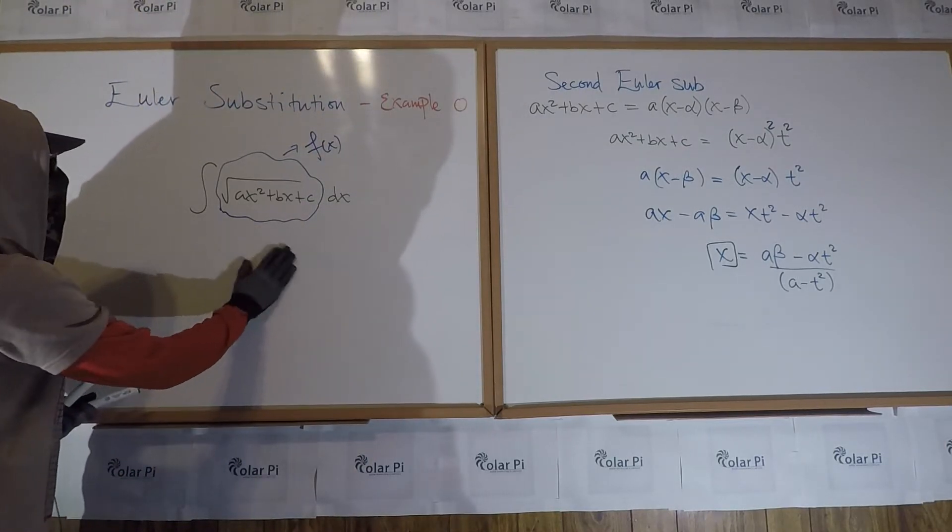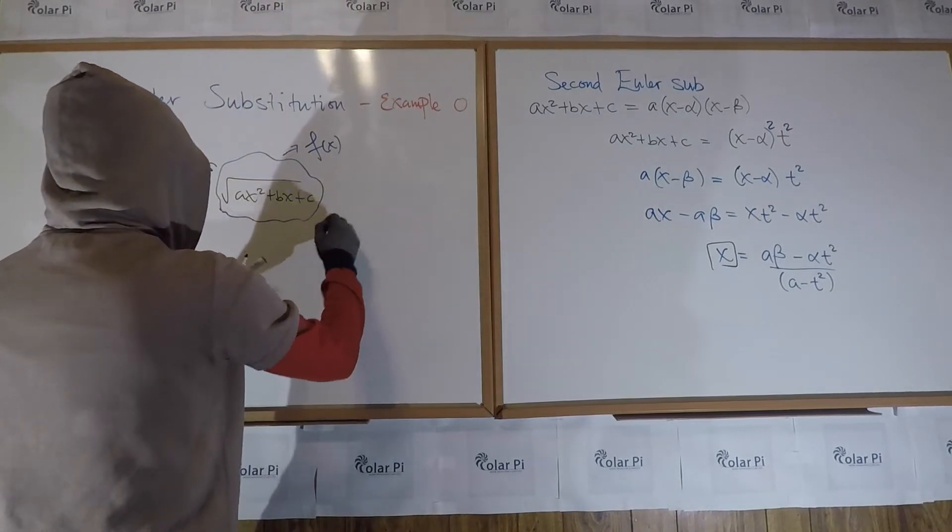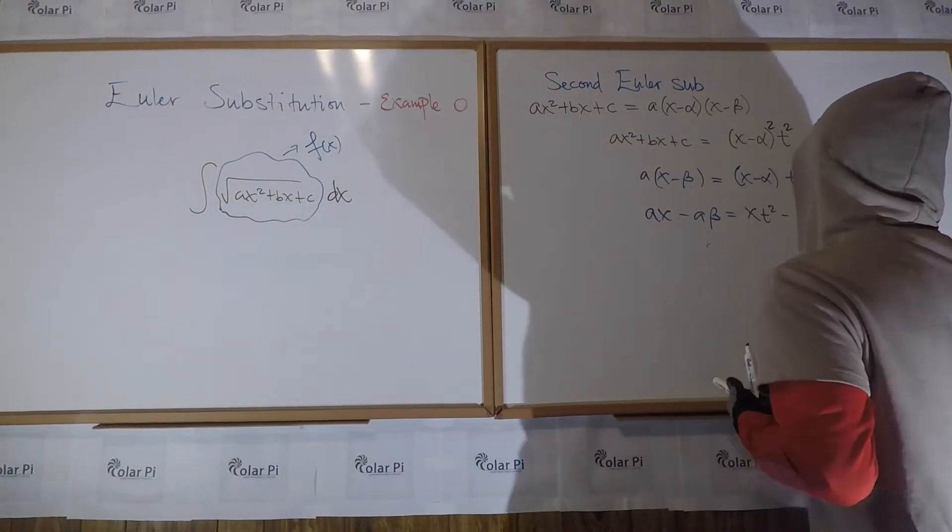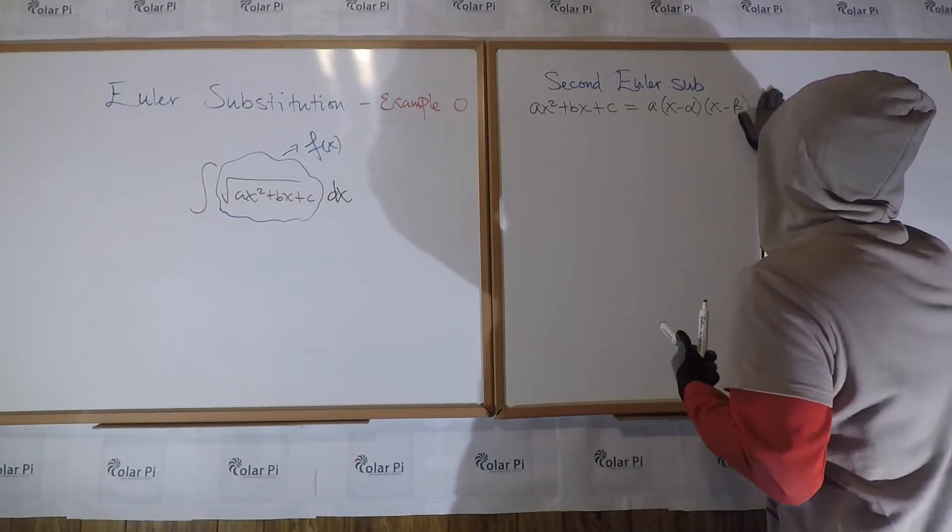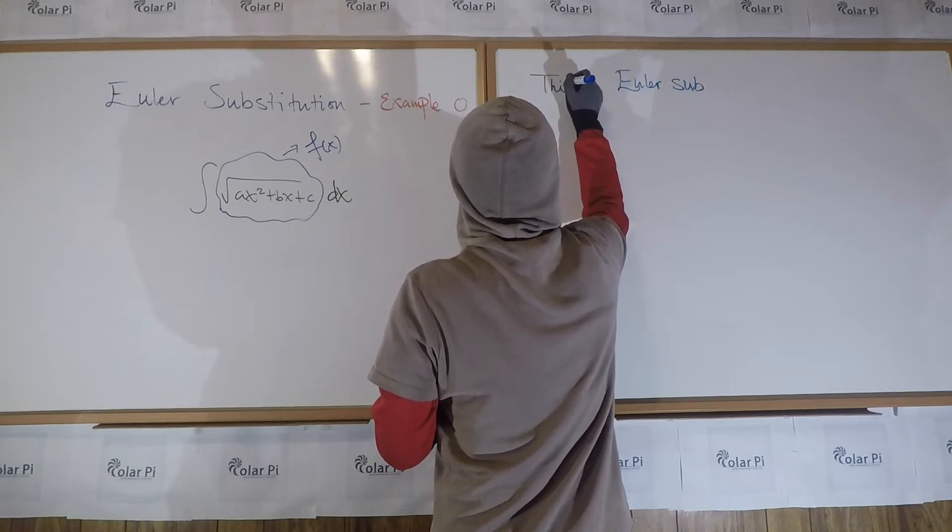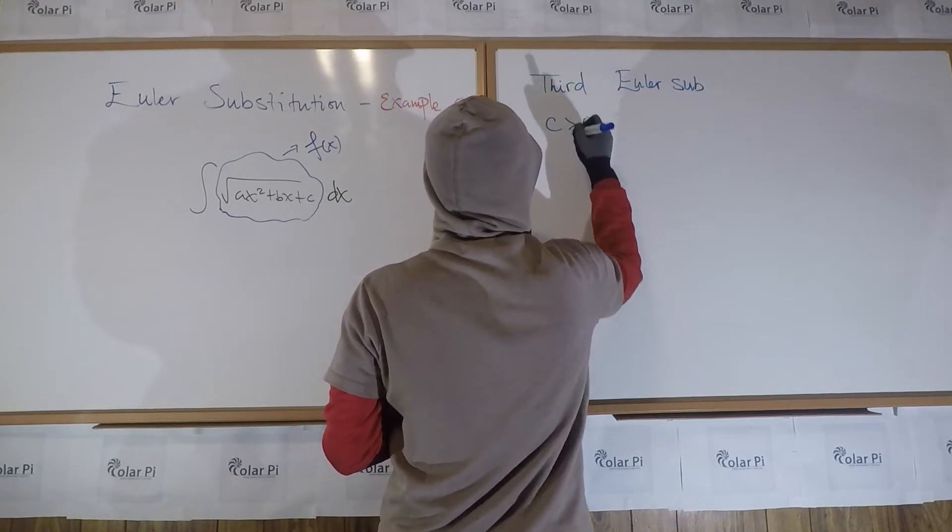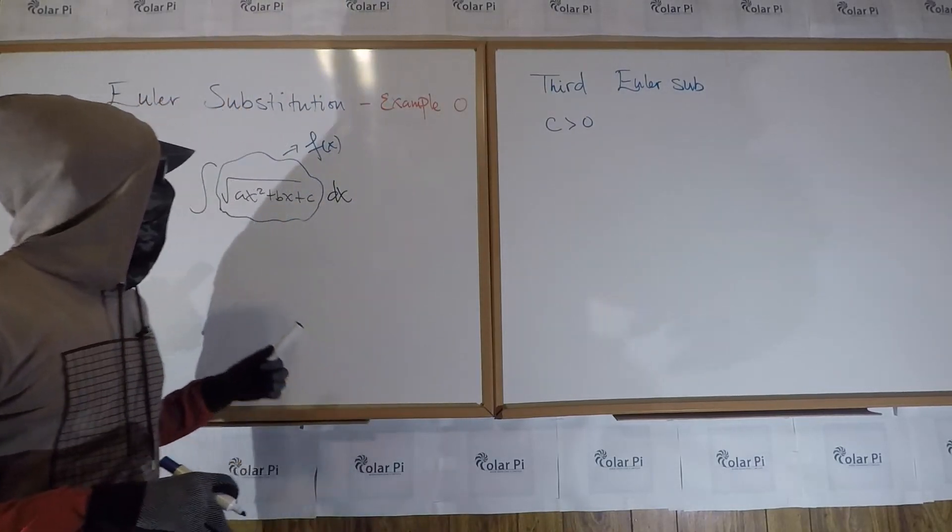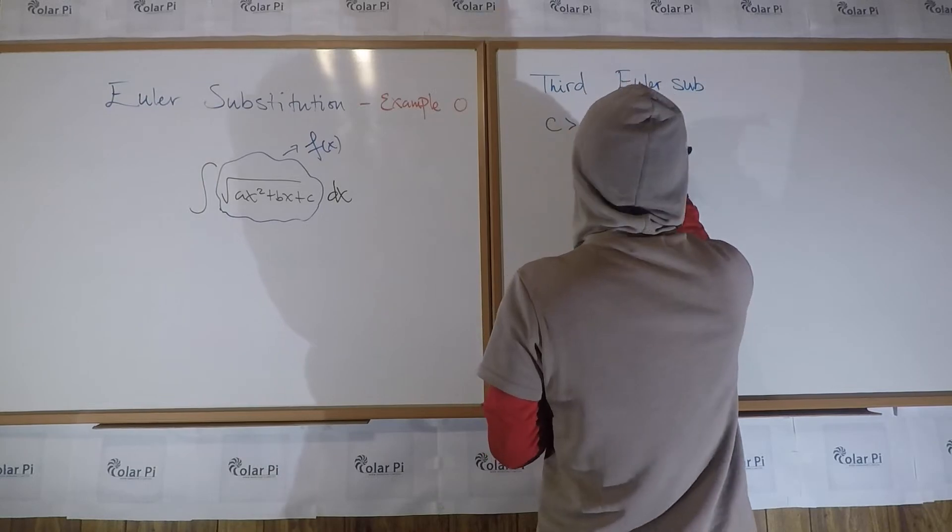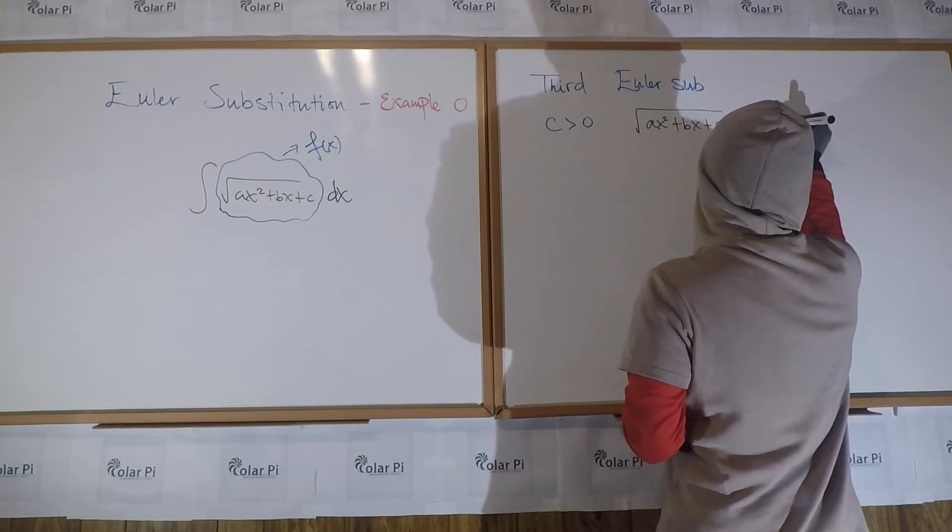Cool. So, finally, the third Euler substitution. And, of course, again, it helps us deal with integrals that involve the same square root. And a slightly different assumption for this third Euler substitution. And, this is the assumption this time. Our assumption this time, for the third Euler sub, our assumption is that c is greater than zero. Put together, all three cases cover all the different possibilities of what could happen with the quadratic. So, if c is greater than zero, then what you should do is, you should let this here, let it equal xt plus root c.